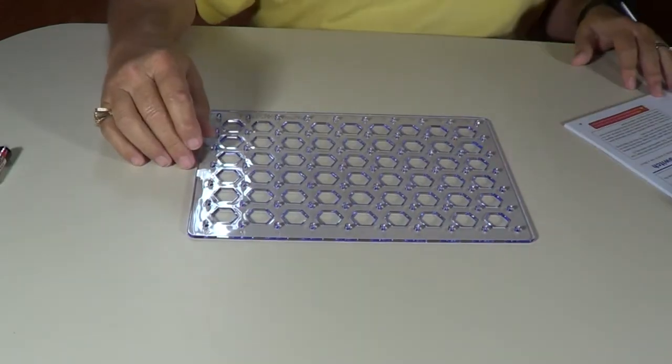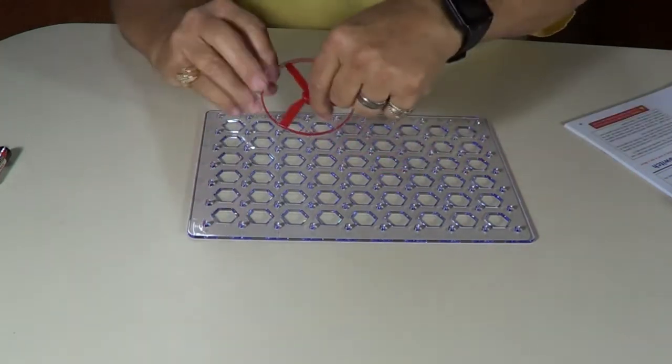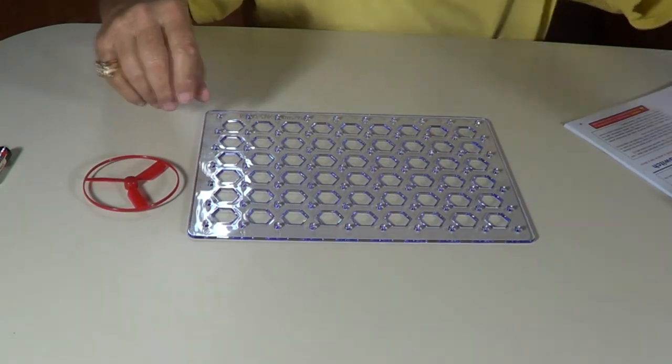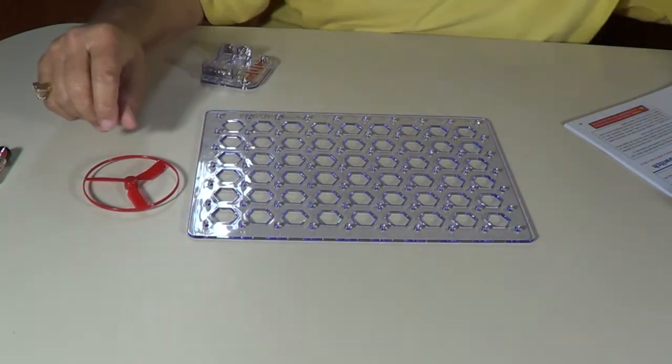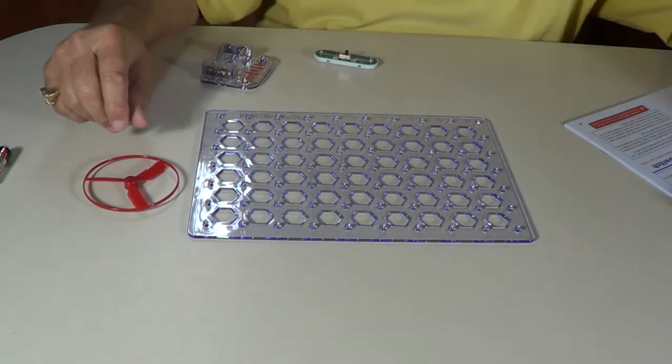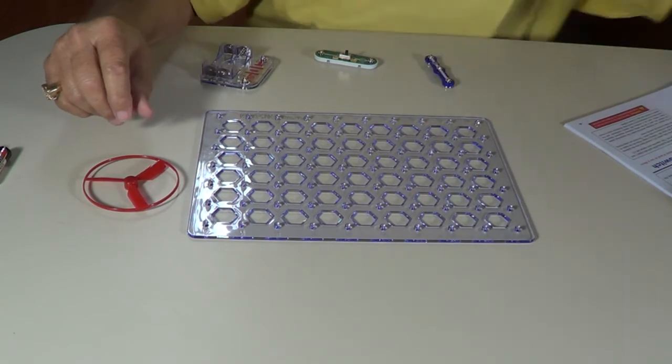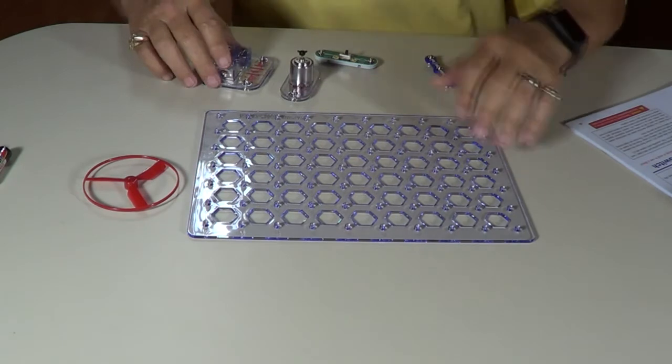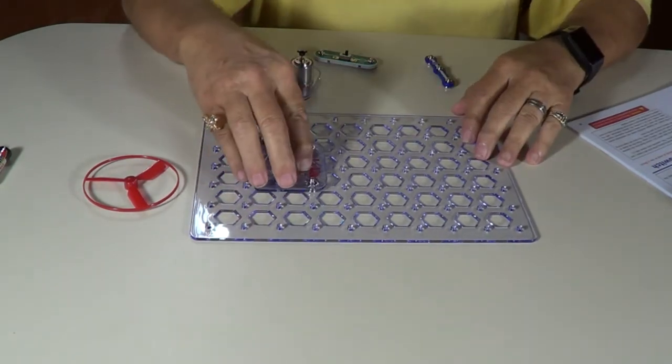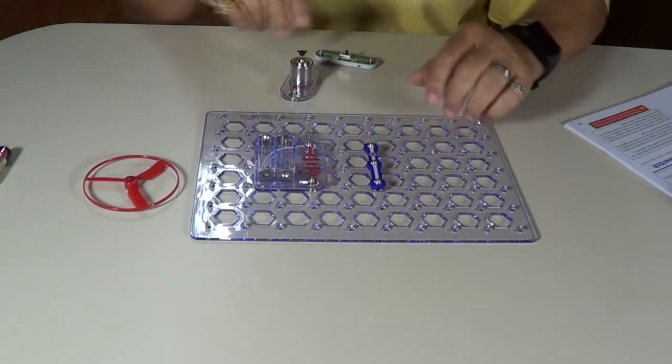For number two, project two, DC motor switch. We're going to need the propeller, the battery pack, the switch S1, the three-prong connector, and the motor. So the first thing you do, the number ones go on first. That's this one, the battery pack, and the connector.